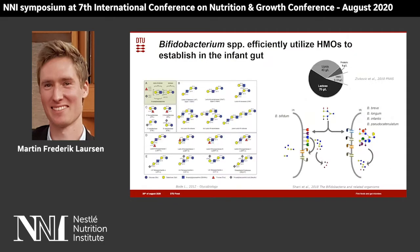Why is it that breast milk is so important? Breast milk is composed of lactose and lipids, but the most abundant component is human milk oligosaccharides, or HMOs. Whereas lactose and lipids are digested by the infant and absorbed, HMOs pass through the gastrointestinal system almost undigested. When they reach the colon, they can serve as metabolic substrates for gut bacteria. Specific Bifidobacterium species have evolved strategies to utilize these oligosaccharides for growth, which explains the dominance of just a few Bifidobacterium species in early life in the breastfed infant.